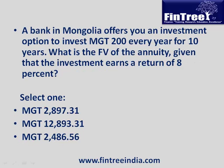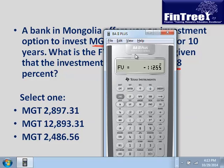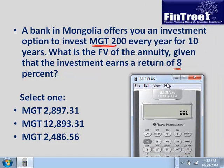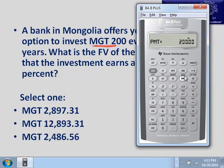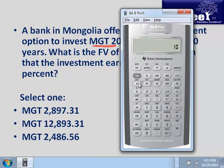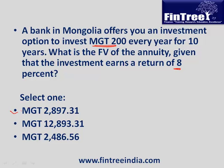A bank in Mongolia offers an investment of 200 Mongolian currency units every year for 10 years. What is the future value of this annuity given a return of 8%? On the financial calculator: payment is 200, N is 10, IY is 8, compute future value — the answer is 2,897.